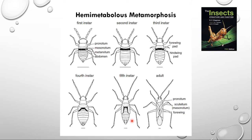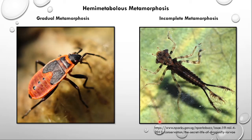Looking in more detail at hemimetabolous metamorphosis: as the insects grow in size from the first nymph instar to the adult, the wing parts start to develop and gradually become the full wings of the adult. There are two types of metamorphosis within hemimetabolous metamorphosis. The first type, where only wing development and genitalia development are seen, is known as gradual metamorphosis.